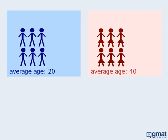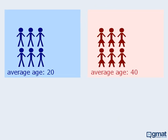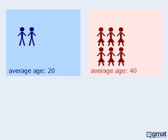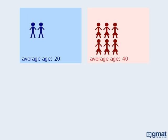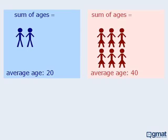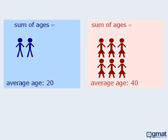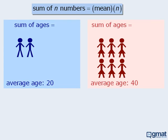Now let's take the original question and change it slightly. Let's keep the average ages of the men and women at 20 and 40 respectively, but let's remove 4 of the men. Now if we combine the two groups, what will be the average age of the combined population? To determine this, let's take the two original groups and find the sum of their ages using the same formula. For the men, the average age is 20 and there are now two men, so the sum of their ages will be 20 times 2, which is 40.